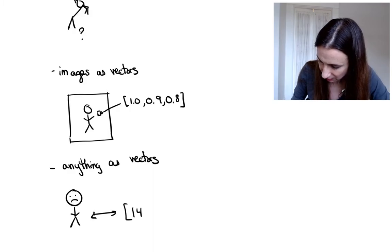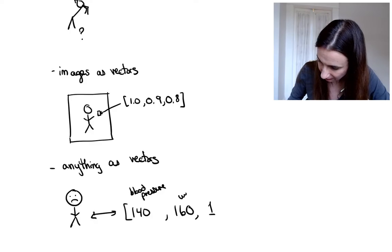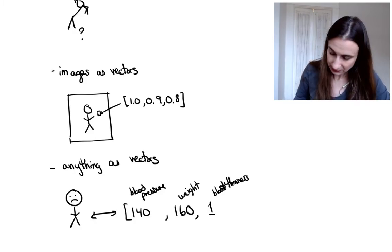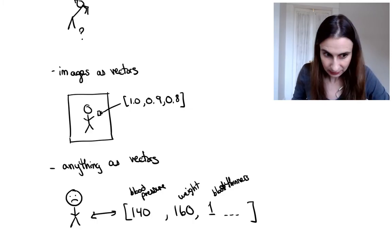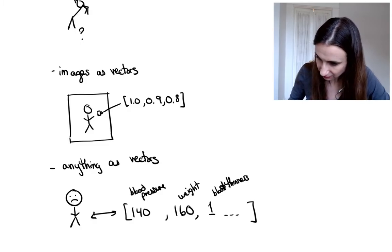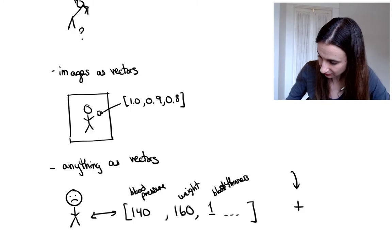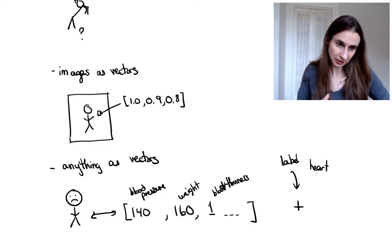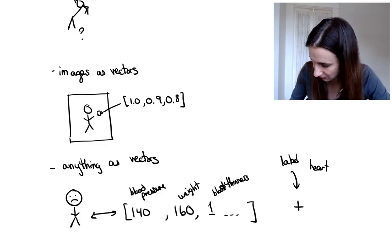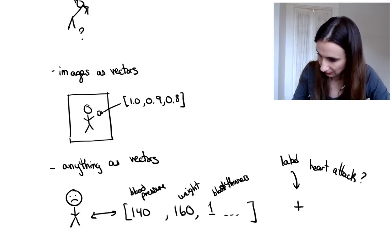So for instance, maybe the first element in the vector is the blood pressure. And then maybe we represent their weight, whether they take blood thinners, so weight, blood thinners, and so on. And then let's say that we're trying to build a classifier for whether or not the patient has a heart attack. So our label for the classification task is whether or not they had a heart attack within a year of the feature vector being constructed, for instance.